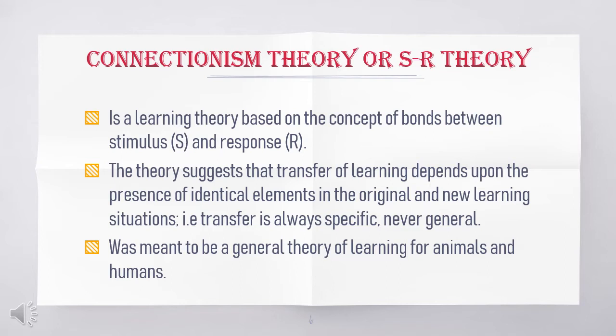Connectionism theory is a learning theory based on the concept of bonds between stimulus and response. The theory suggests that transfer of learning depends upon the presence of identical elements in the original and new learning situations. For example, transfer is always specific, never general. Connectionism theory was meant to be a general theory of learning for animals and humans.